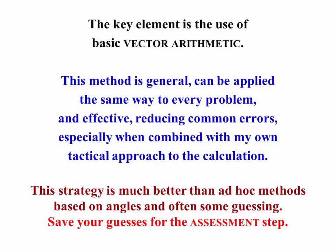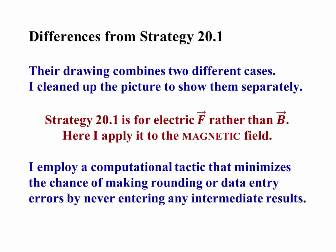This makes our approach to every problem the same, so that this general approach will reduce the kinds of errors that you can make if you take a sort of slapdash methods for calculating various fields. The same approach to a problem is always the most effective one, and much better than ad hoc methods involving guessing. Our guessing will always be done at the assessment step. There's only a few differences from our strategy 20.1. We're now doing it for a magnetic field rather than an electric field, but the basic skills are the same.